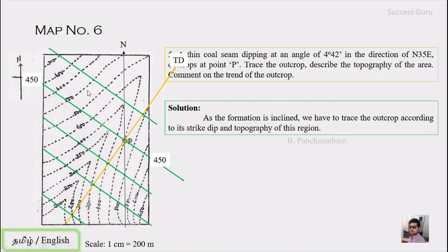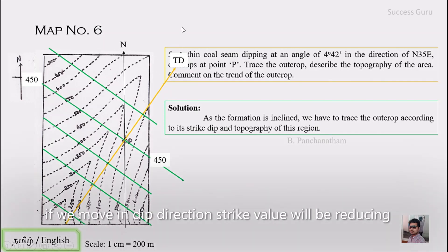Moving in the true dip direction means moving toward lower elevation, so strike values decrease in that direction. Moving in the opposite direction means going upslope, so strike values increase. With the first strike at 450 meters, strikes in the upslope direction are 500, 550, 600, and moving in the dip direction the next value is 400. All strikes are now drawn and labeled across the map.